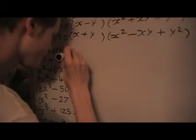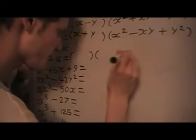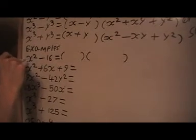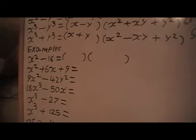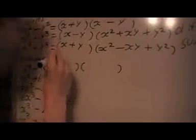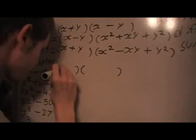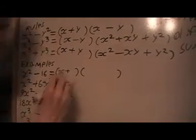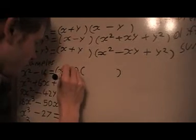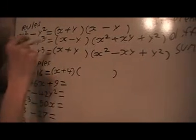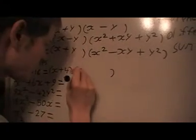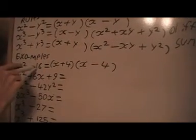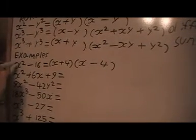So this one's the difference of two squares, because we notice that x² is a square and 16 is a square number. So basically what I do is I just put x plus 4, x minus 4. Because notice in here, this is the y and this is the x.